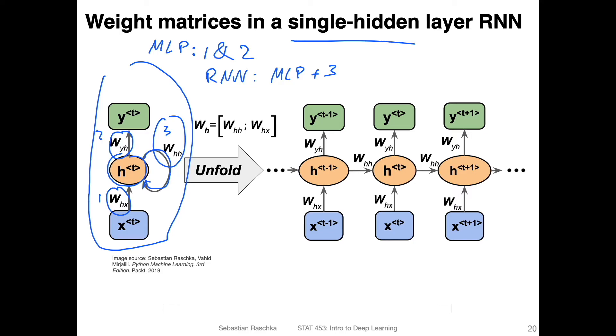So to summarize, in an RNN here, we have two matrices for the hidden layer. One is connecting the input here, so the input to the hidden layer. And the other one is connecting the previous hidden layer to the current hidden layer, which is this W_hh here.